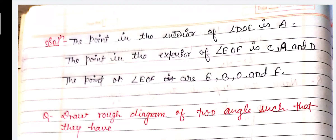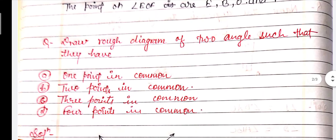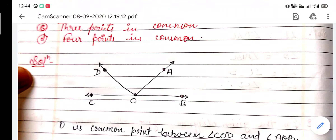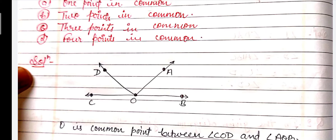Now let's see the next question: draw a rough diagram of two angles such that they have (a) one point in common, (b) two points in common, (c) three points in common, and (d) four points in common. For part (a), there are two angles: angle DOC and angle AOB. In both angles we can see there is only one vertex, that is point O. So O is the common point for angle DOC and angle AOB.